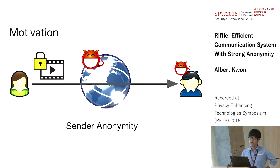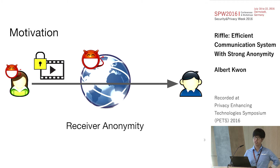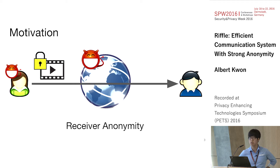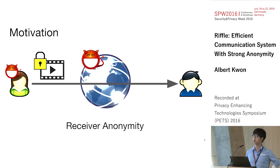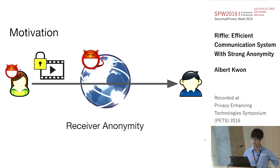The other form of anonymity is receiver anonymity, where Bob's identity is protected from Alice and the rest of the internet. This is useful, for instance, if Bob is WikiLeaks and he doesn't want his true identity known to avoid persecution or shutdown. So these are the two forms of anonymity that we would want.